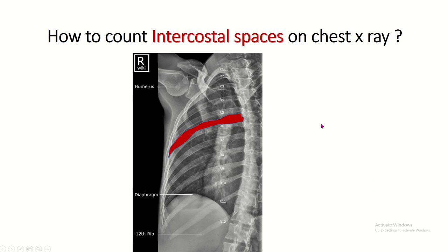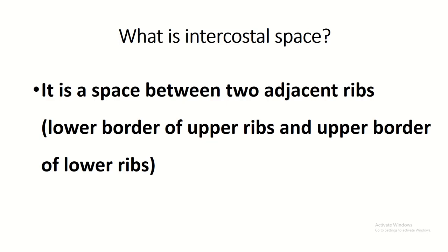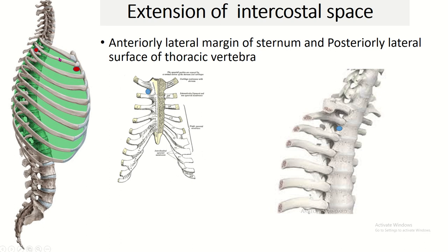Welcome to the TG Human Anatomy channel. In this video I discuss how to count intercostal spaces on chest X-ray. First, what is intercostal space? It is the space between two adjacent ribs. The lower border of the upper rib and upper border of the lower rib are the anterior bone posterior boundary of the intercostal space.